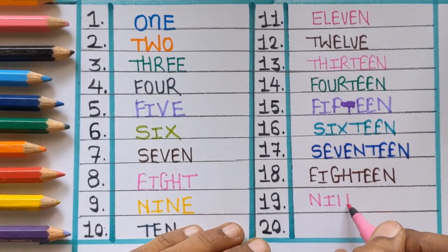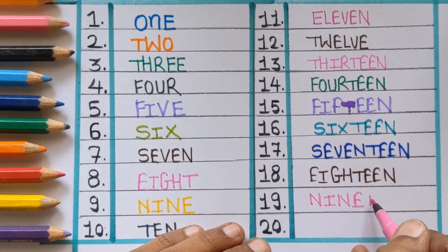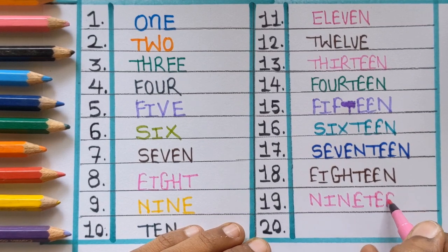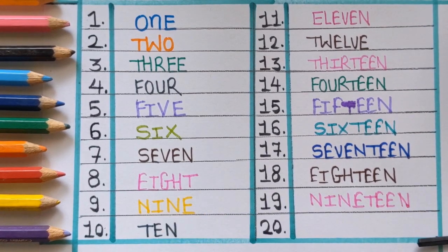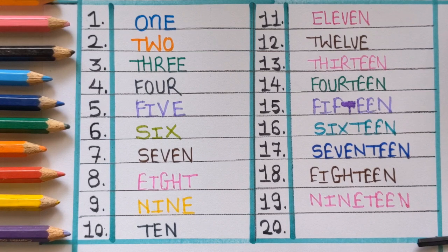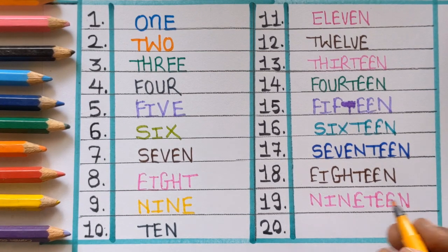After nineteen, next number is twenty, T-W-E-N-T-Y, twenty.